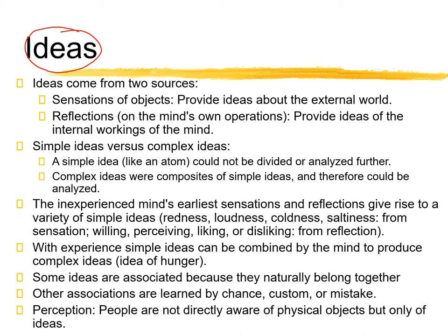The main concept in Locke's epistemology is ideas. Ideas have two sources: first, sensations of objects, and second, reflections. Sensations of objects provide us ideas about the external world — these are the sensations we receive through our senses.